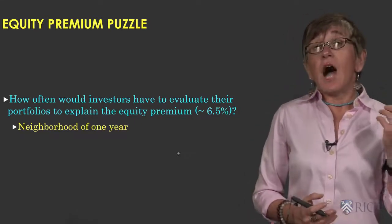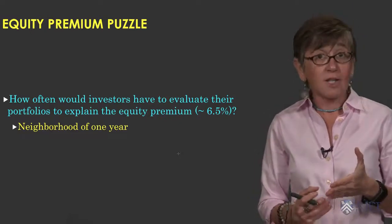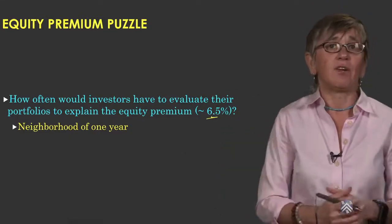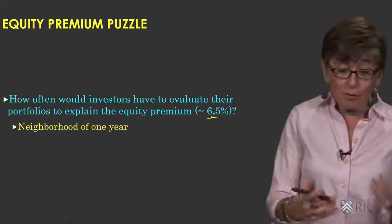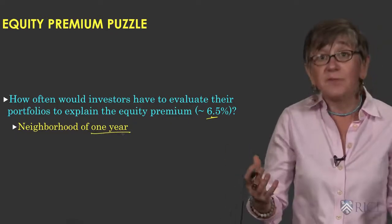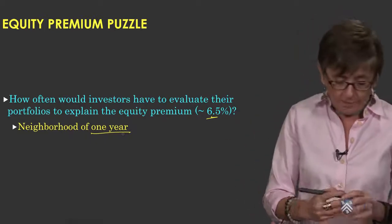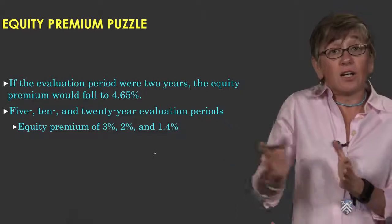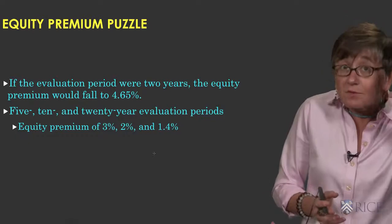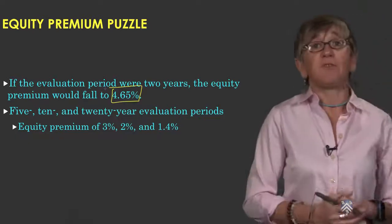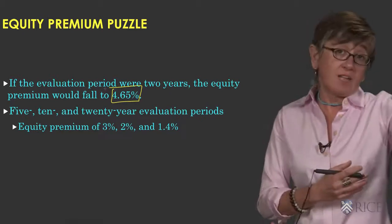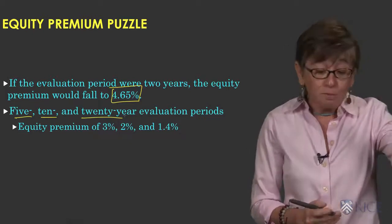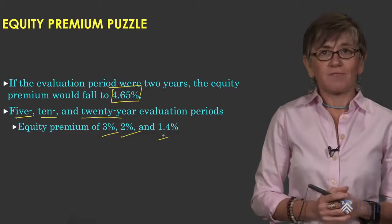How often would investors have to be evaluating their portfolios to explain the observed equity premium of 6.5%, according to this theory? It turns out that the answer is in the neighborhood of about one year — which is very plausible and not far from what we observe. If the evaluation periods were longer — say two years — the required premium would fall to 4.65%. And if you considered even longer evaluation periods of 5, 10, and 20 years, the corresponding required premium would be 3%, 2%, or 1.4%.